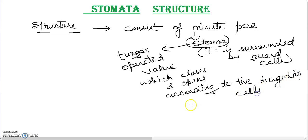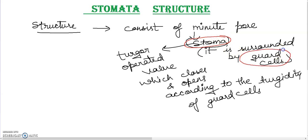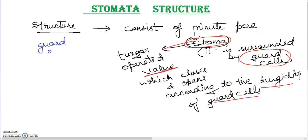You can say it is the turgidity of guard cells. Our stomata is a structure made from a small pore-like structure called stoma. This stoma is surrounded by guard cells. The functioning of the stomata will depend on the guard cells. The guard cells are fully epidermal cells.